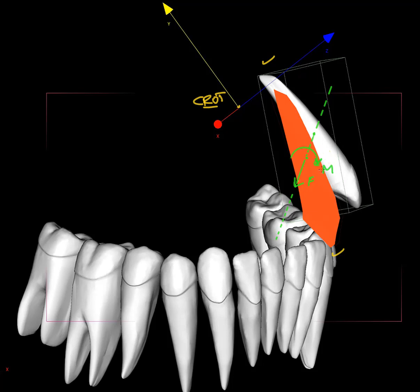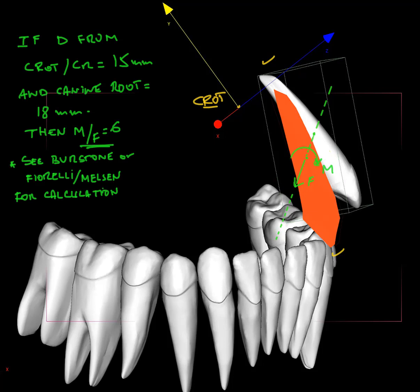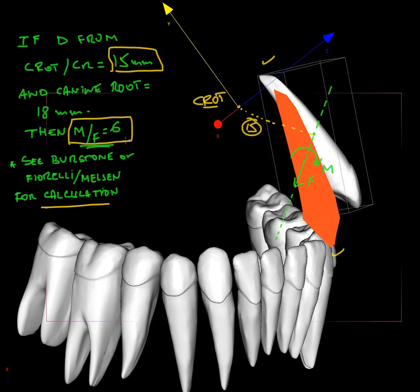The question was how can we duplicate this in the mouth to get this force system and the center resistance. So we look at the calculations from Burstone, Fiori, and Melsen in their nice e-book that I recommend. They calculated that if you take the distance from the center resistance to the center rotation — about 15 mm in this case — the moment-to-force ratio at this level has to be 6.